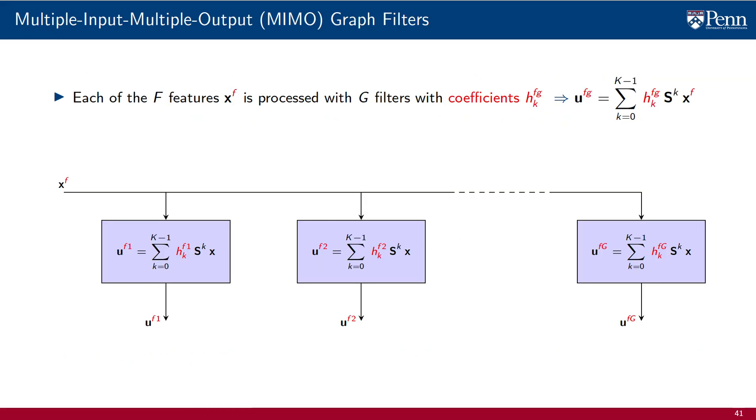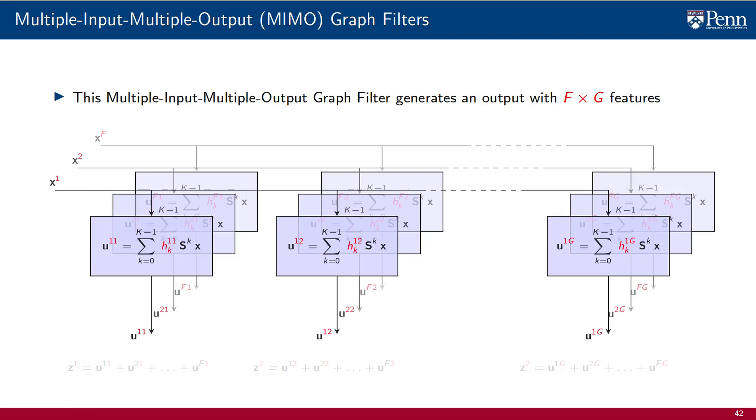Formally, for given input feature X superscript F, we consider a bank of capital J filters with coefficients HK annotated with superscripts F and G. These graph filters applied to signal XF produce an output signal UFG. The output signal depends on the input feature XF and the filter coefficients HKFG. Since we have a total of F input features, and each of them is processed with a filter bank containing G features, we have a total of F times G filters that are run in parallel to produce as many features.